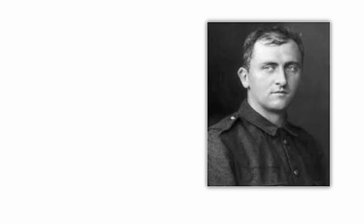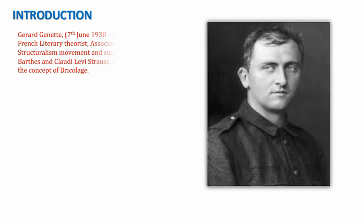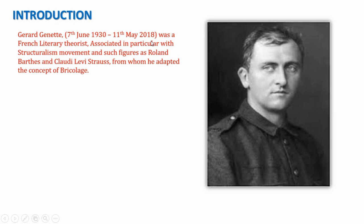Here is a picture of Gérard Genette in his very young age. His time period is 7th June 1930 to 11th May 2018. He was a French literary theorist, associated in particular with the structuralism movement, alongside figures like Roland Barthes and Claude Lévi-Strauss. I have already covered Roland Barthes in my last video — you can check that playlist.